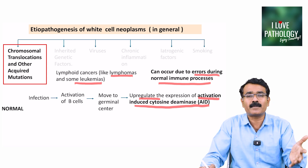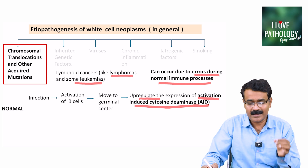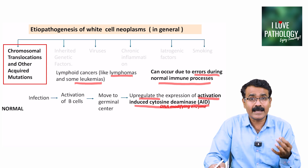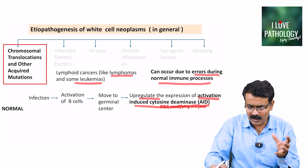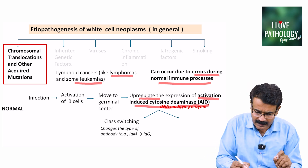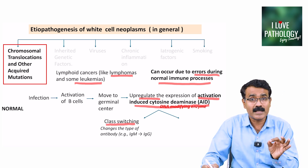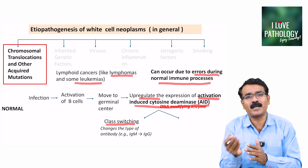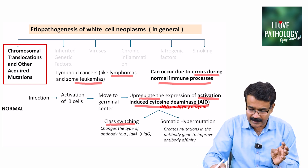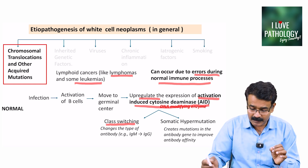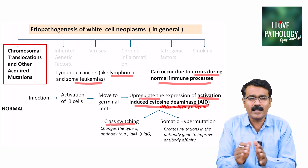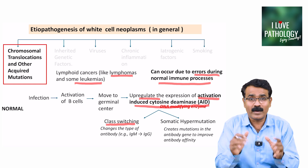AID is a DNA modifying enzyme. It results in two important modifications: first, class switching — meaning a change from one type of antibody to another, for example IgM gets converted to IgG; and second, somatic hypermutation, which creates mutations in the antibody gene to improve the affinity of the antibody. These two changes occur in normal circumstances whenever we encounter infection.